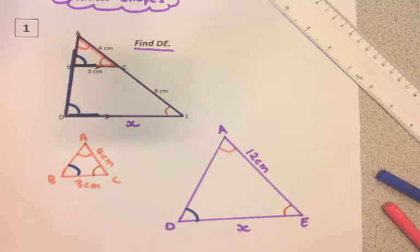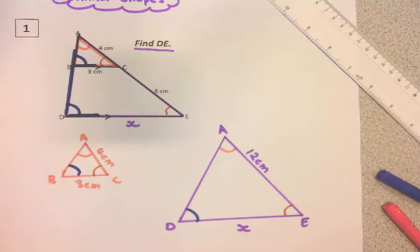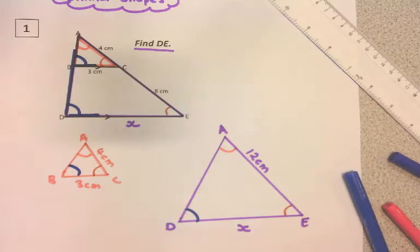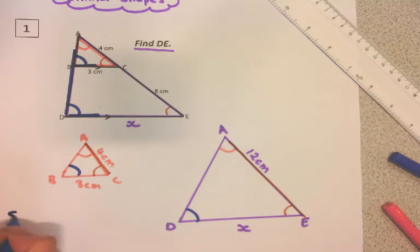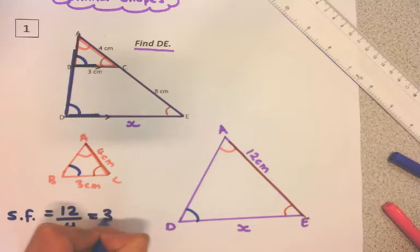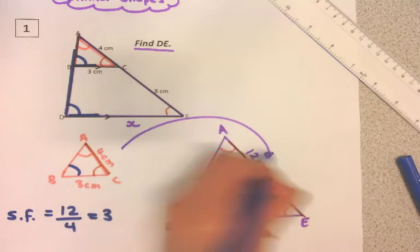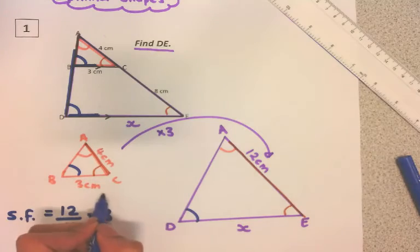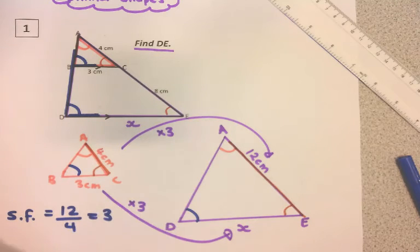Now let's find the missing length X. Because these shapes are similar, one is an enlargement of the other, so I can find the scale factor. I'm going to find some corresponding lengths. This length here corresponds to that length. So the scale factor is 12 divided by 4, which is 3. This means multiply by 3 to get to that length. So X equals 9 centimeters.